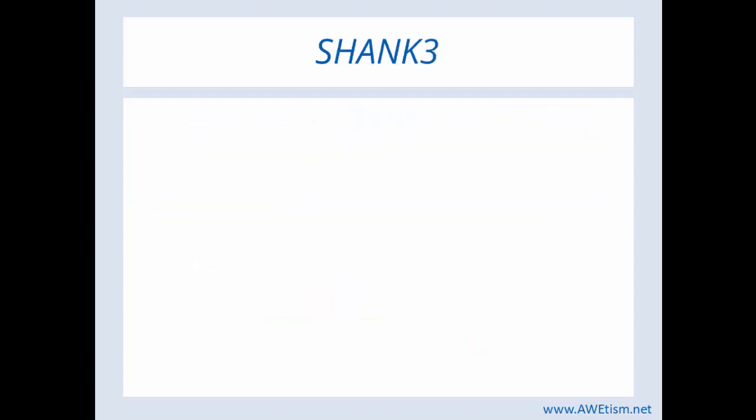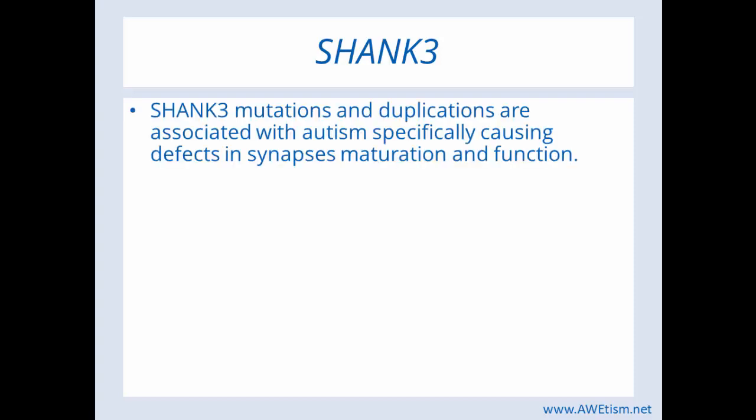Let's specifically look at Schenck 3. Schenck 3 is the one that has been involved quite a bit in autism. Schenck 3 mutations and duplications are associated with autism, specifically causing defects in synaptic maturation and function.